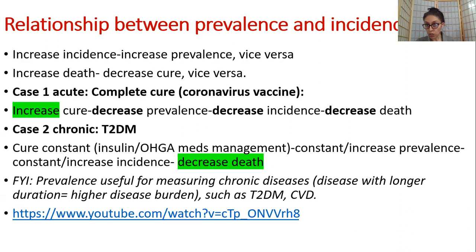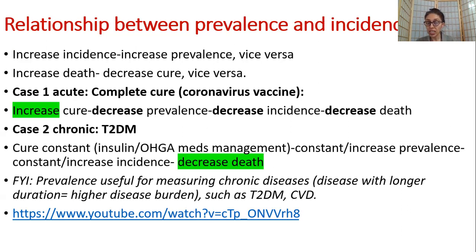Let's look at specific cases of disease conditions and morbidity. For an acute condition — hypothetically, if COVID vaccines are 100% effective: you will have increased cure, decreased prevalence (not many people already have COVID), decreased incidence (not many new people developing COVID because they have the vaccine), and decreased death. Cure and death are oppositely related. In acute cases, with increased cure you also have incidence and prevalence going down. This is an acute disease condition.